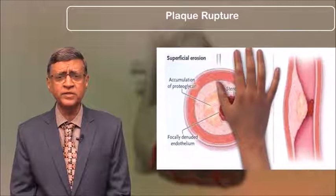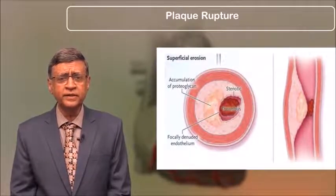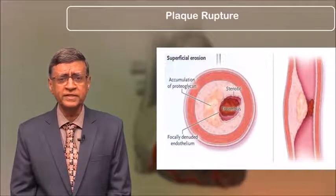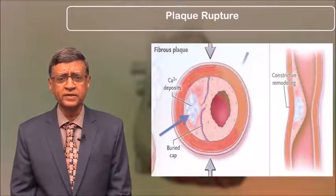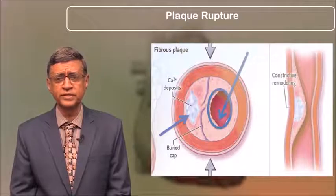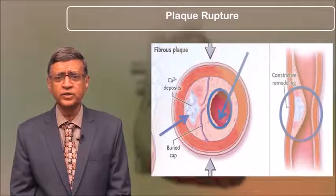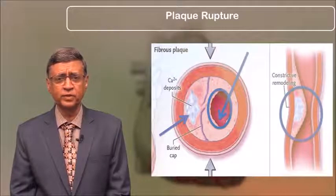This, on the other hand, is chronic stable angina, where you can see that there is hardly any lipids or cholesterol, but there is a lot of calcium and a thick fibrous cap. You can see there is stenosis, which can produce angina. The cross-section and longitudinal section also show a constrictive remodeling.